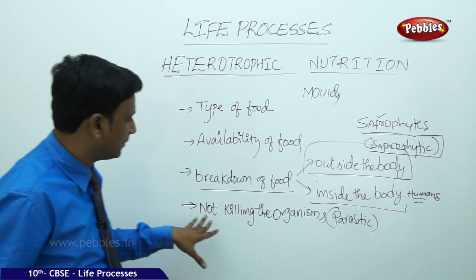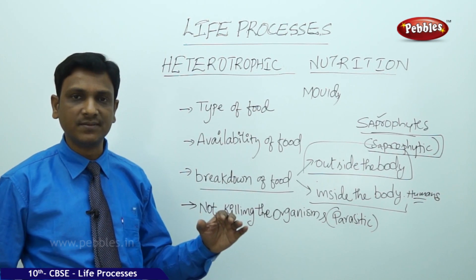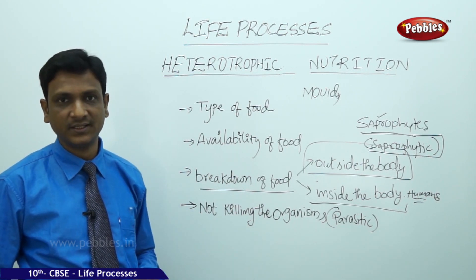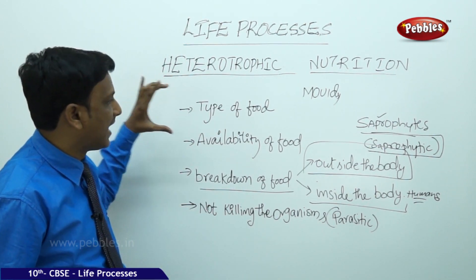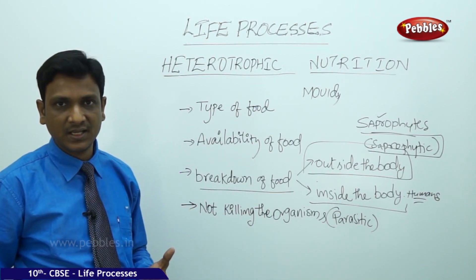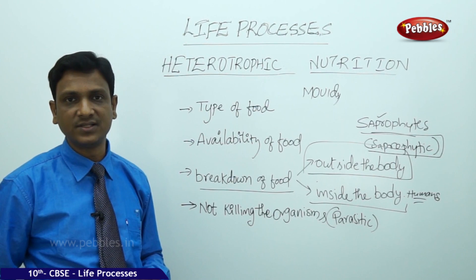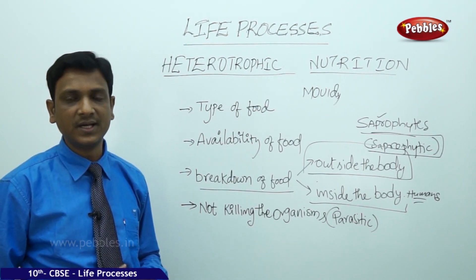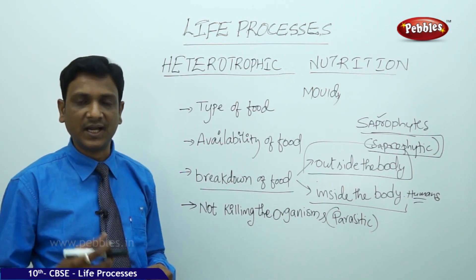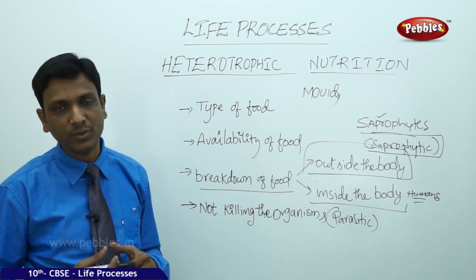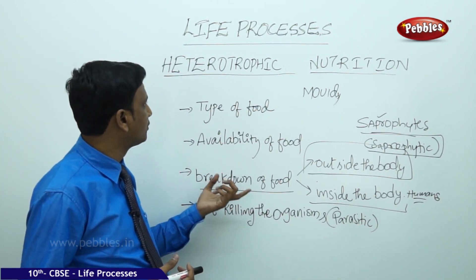Another kind of nutrition is the parasitic mode of nutrition, which also comes under heterotrophic nutrition. Here, organisms do not kill the other organism but simply feed on it and live on it. This category can even include certain plants. Under parasitic plants, the example of Cuscuta is notable — Cuscuta is a plant that has a special structure called haustoria, through which it sucks juices from other plants. It depends on the host plant for nutrients without killing it. This is an example of a parasitic plant under heterotrophic nutrition.